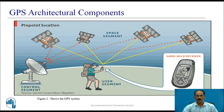This is the architecture of the GPS system. It consists of three segments. One is the space segment, which requires at least four satellites. There is a control segment which consists of control, monitoring, and tracking of the satellites. There is also a user segment where you can find the location of the GPS receiver.